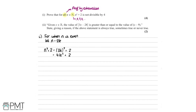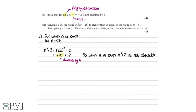This equals 4k² + 2, and this actually proves that when n is an even number, n² + 2 is not divisible by 4. We have 4 multiplied by k² — that part is divisible by 4, since 4 multiplied by anything is always divisible by 4 — however we then add 2, which isn't divisible by 4. So the overall result isn't divisible by 4. We write: when n is even, n² + 2 is not divisible by 4, since it is 2 more than a multiple of 4, and 2 isn't divisible by 4.